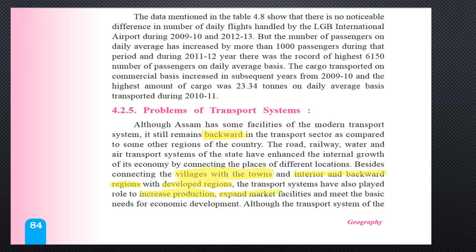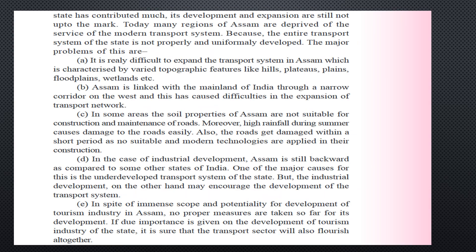Transportation enables market facilities — when production increases, the benefit is realized when there is a market to sell goods and services. For example, because of the transportation system, we can order anything on Amazon, Nykaa, or Flipkart and it reaches us within two days, thanks to delivery networks using this transportation infrastructure. Although the transportation system of the state has contributed much, its development and expansion are still not up to the mark, and many regions of Assam are still deprived of modern transport services.